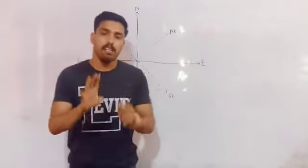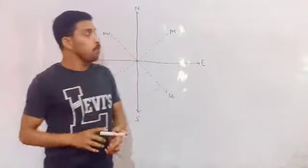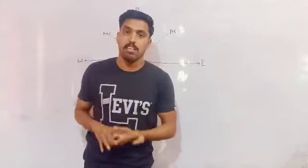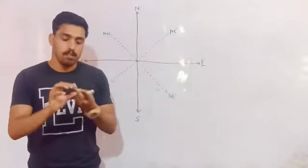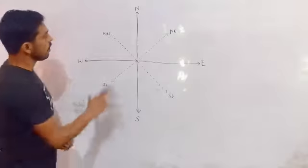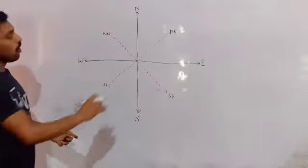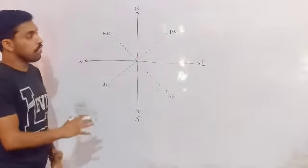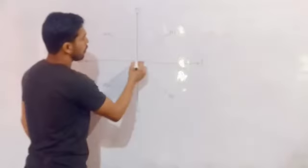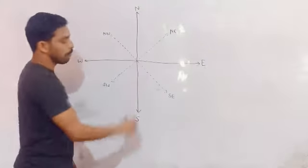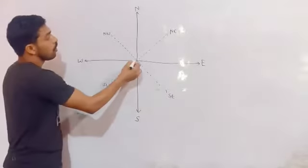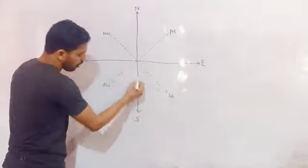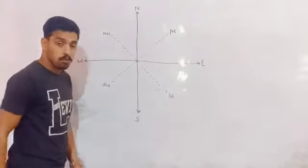Mainly there are four directions: North, South, East, and West. These are our four main directions.